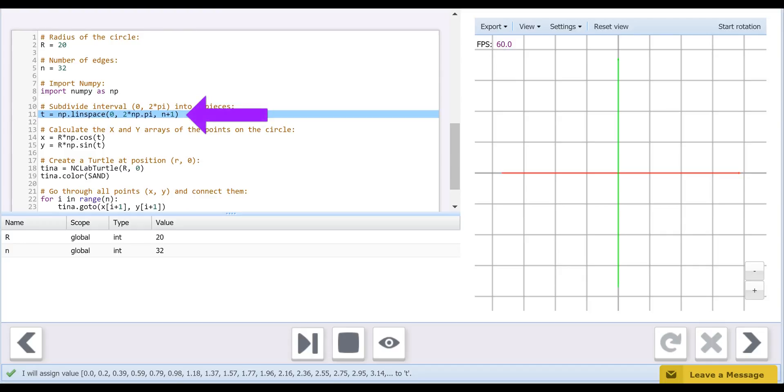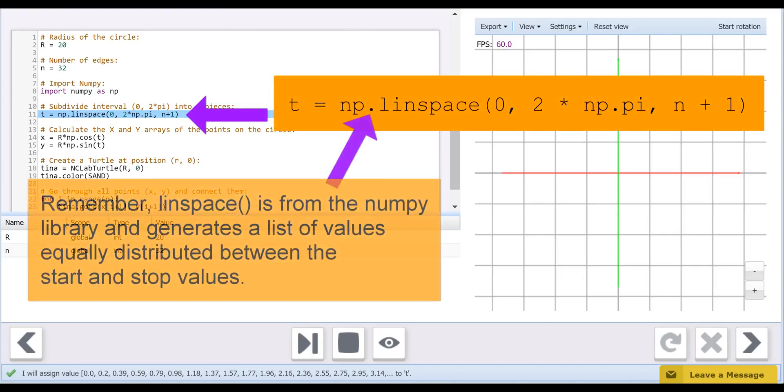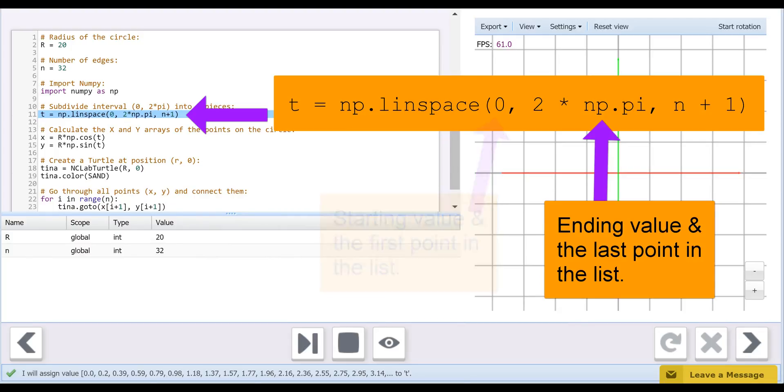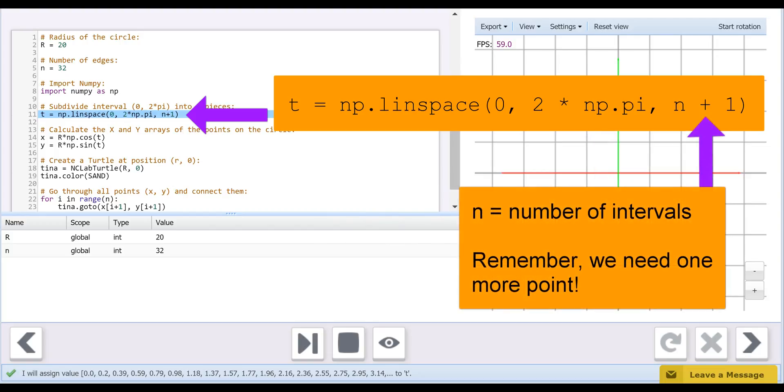On line 11, we use the Linspace function to create our array of angles needed to calculate X and Y. Again, for a full circle, our starting value is 0 and our ending value is 2 pi. Notice that pi itself is a NumPy function, and that the number of points is one more than the number of intervals.